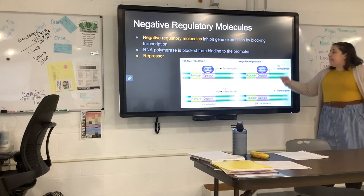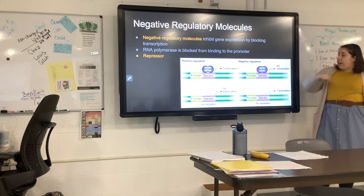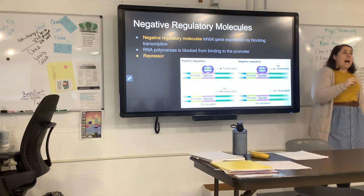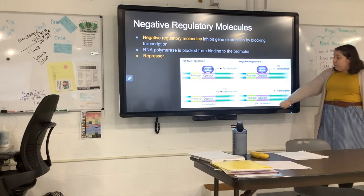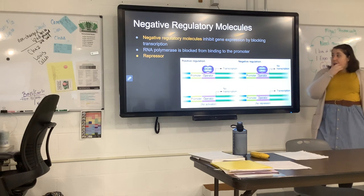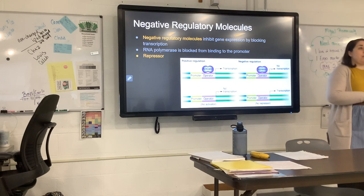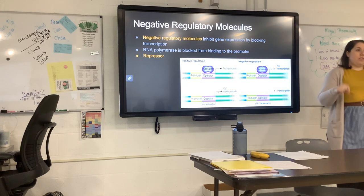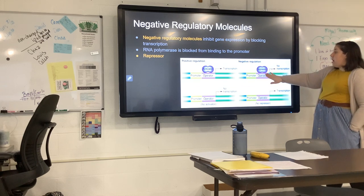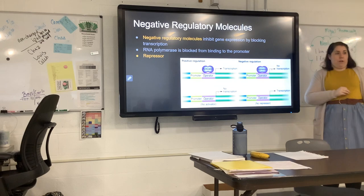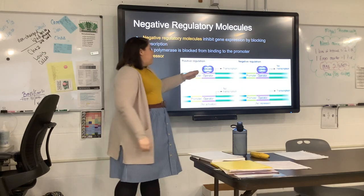Negative regulation deals with a repressor. In negative regulation, if there is a repressor attached to the operator, RNA polymerase cannot attach and we cannot have transcription. But when the repressor is removed, we can have transcription. Whether or not a gene has positive or negative regulation depends on the type of gene and that type of signal pathway — you would have to be told that. But you could determine: if there is a molecule on the operator and no transcription, that is negative regulation. If there is a molecule on the operator and there is transcription, it's positive.